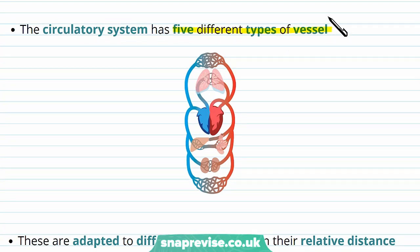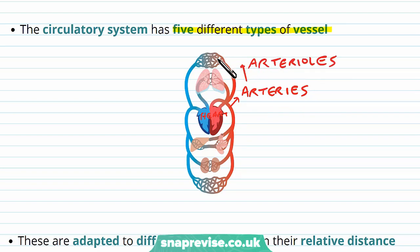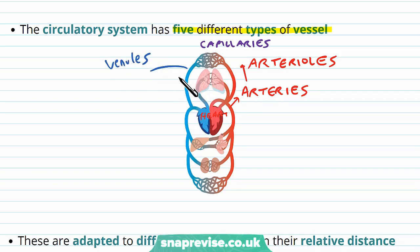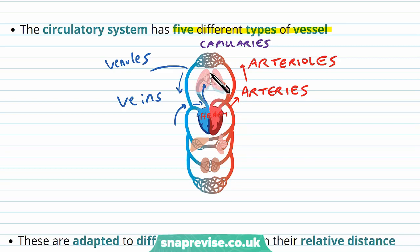The circulatory system has five different types of vessels. At the centre is the heart — not a vessel itself, but the pump of the system. The heart sends blood out first into arteries, which always go away from the heart. As arteries become smaller they become arterioles, which eventually become capillaries where exchange happens. Capillaries rejoin to form venules, which join together to form larger vessels called veins, bringing blood back to the heart. Remember: arteries go away, veins go towards.